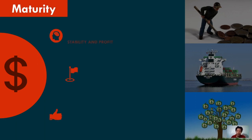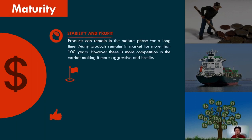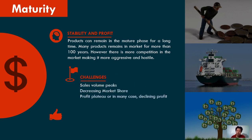The maturity stage is characterized by stability and profit. Products can remain in a mature phase for a long period of time — many products remain in the market for more than 100 years. However, there is more competition in the market, making it more aggressive and hostile. A key challenge of the maturity stage is that sales volume peaks — meaning the volume cannot go higher than the current status because the market has already been saturated, with more competitors and a lot of options available.